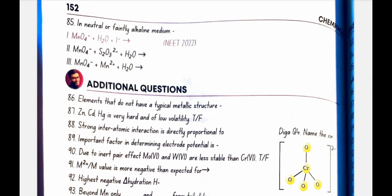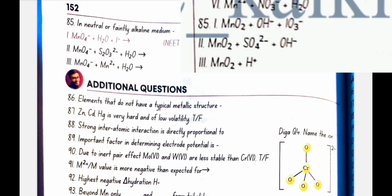In neutral or faintly alkaline medium, MnO4 plus H2O plus I- gives MnO2 plus OH minus plus IO3 minus. MnO4 minus plus S2O3 2 minus plus H2O gives MnO2 plus SO4 2 minus plus OH minus. MnO4 minus plus Mn2 plus plus H2O gives MnO2 plus H plus.